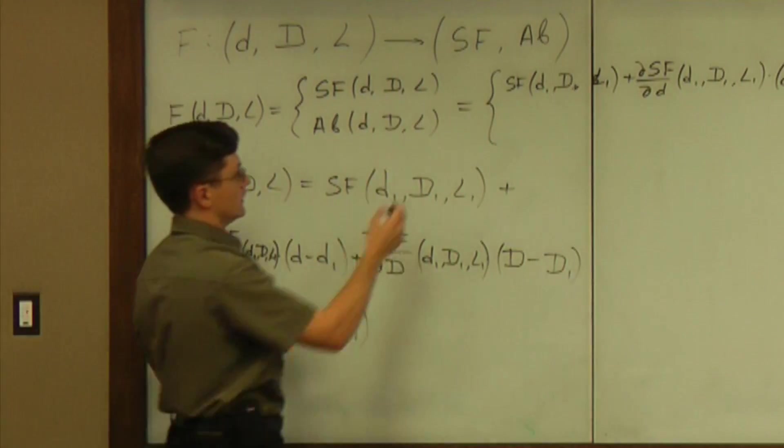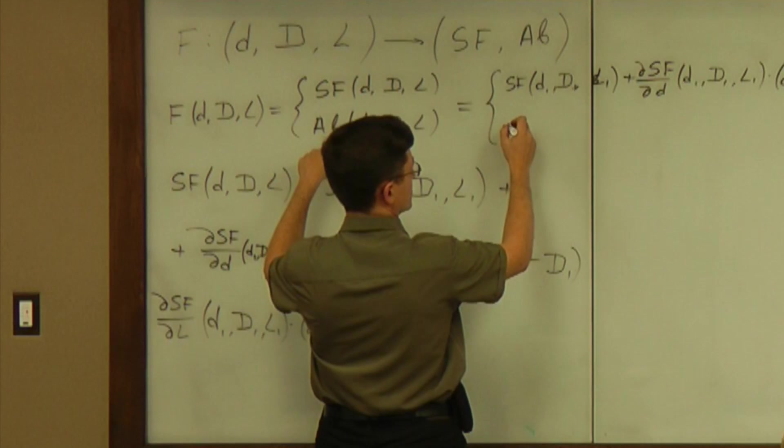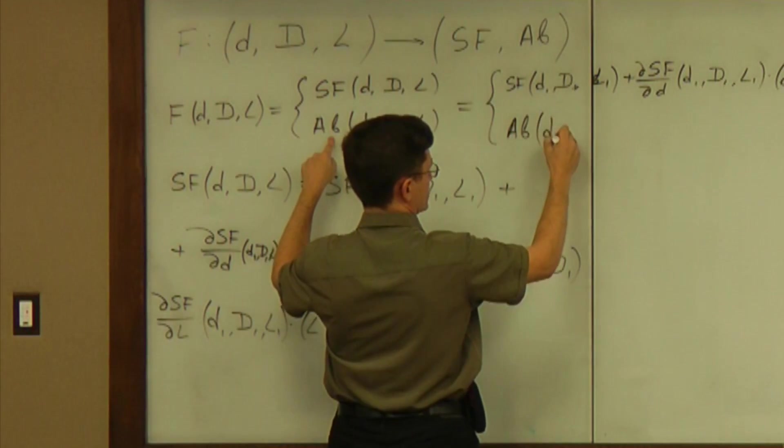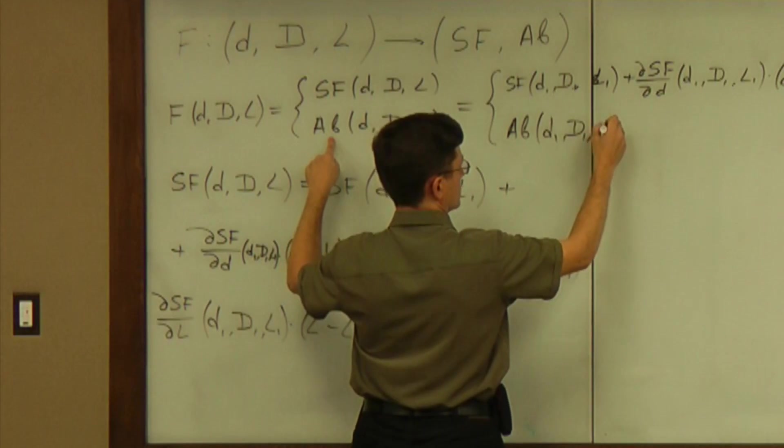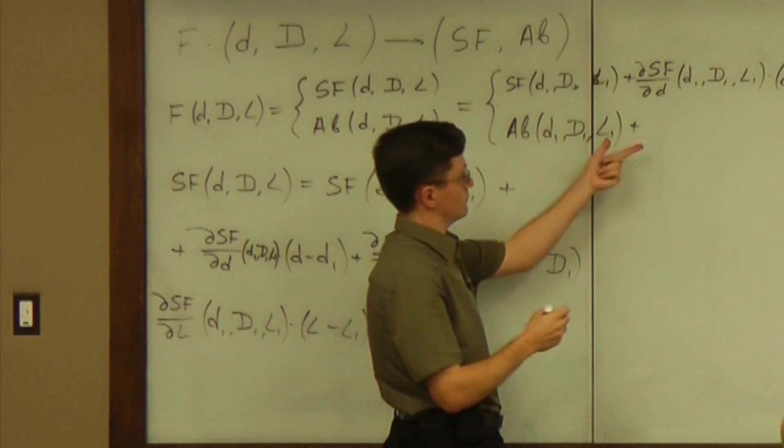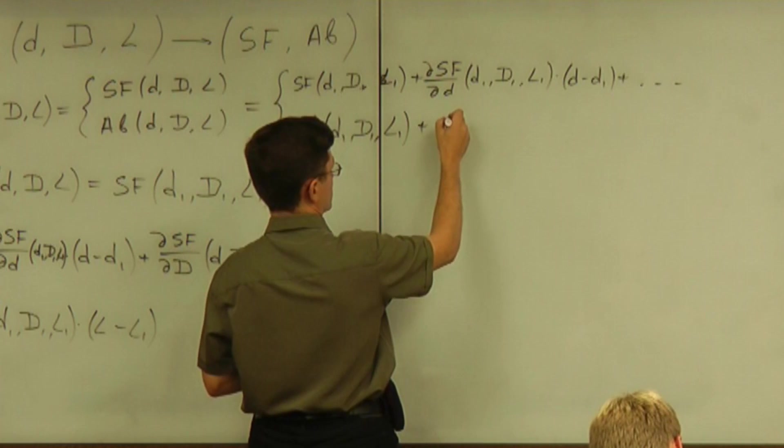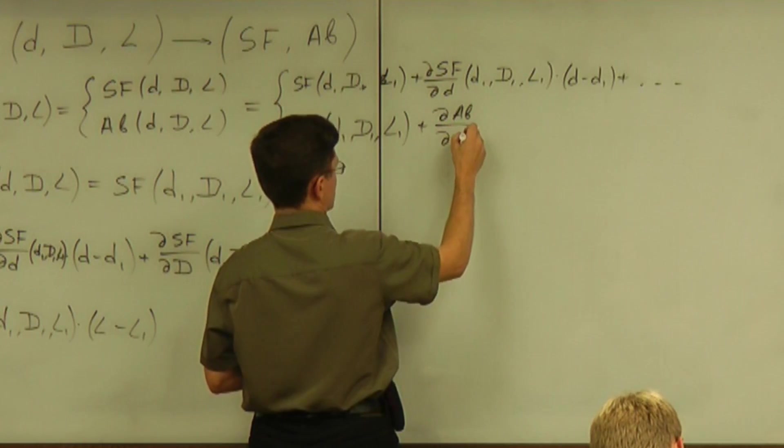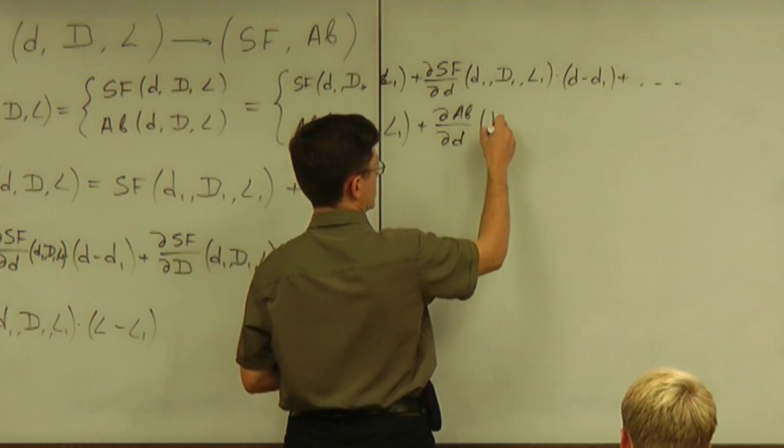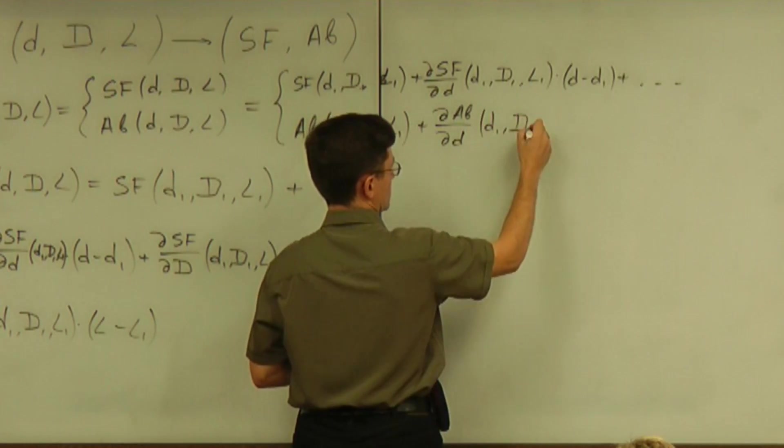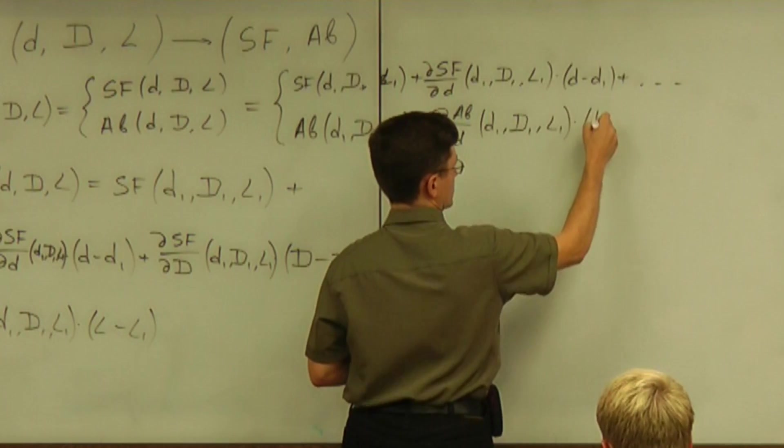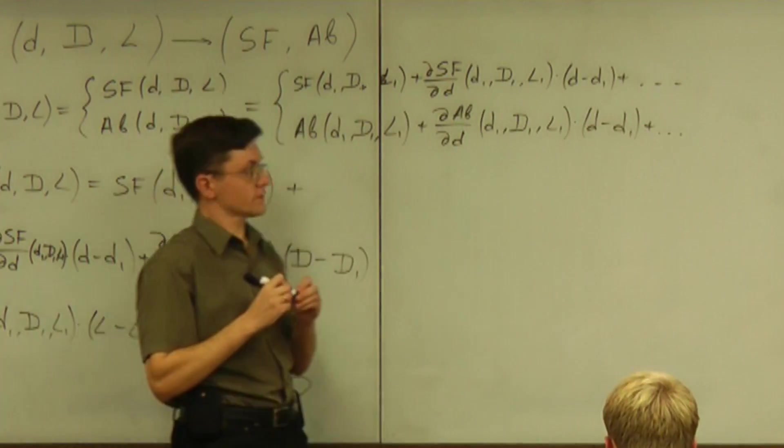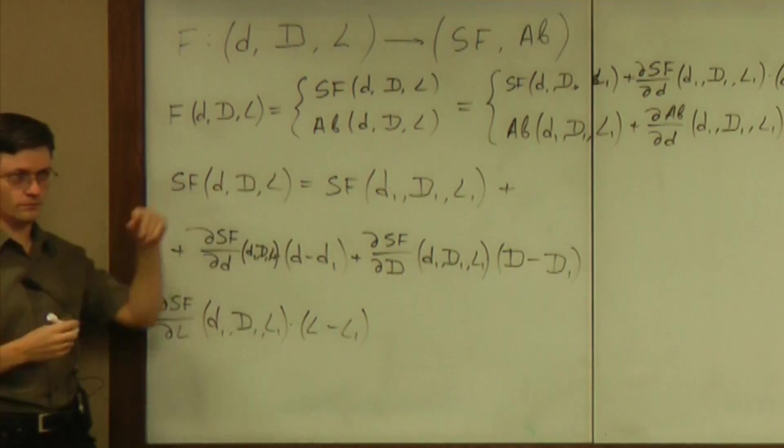These two. And then avoid buckling is going to be approximately avoid buckling at D1, capital D1, L1. A constant term plus some linear terms. So the partial of avoid buckling with respect to little d evaluated at D1, capital D1, L1 times D minus D1. And then plus two more terms with those partial derivatives.